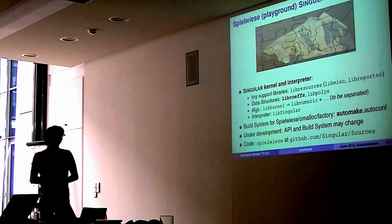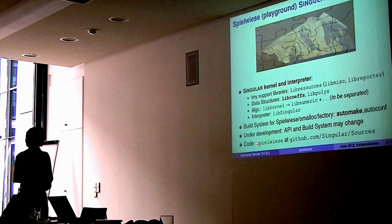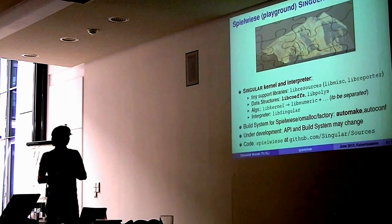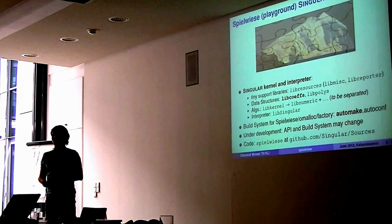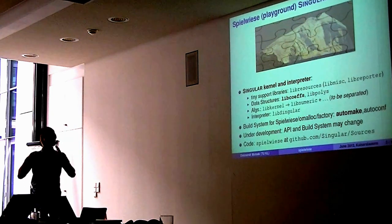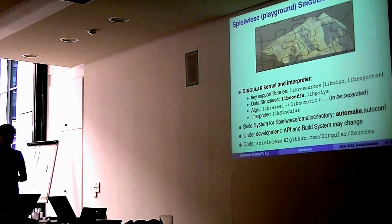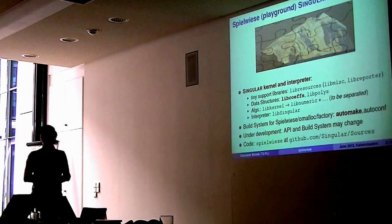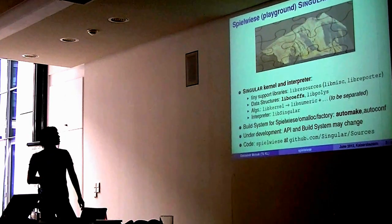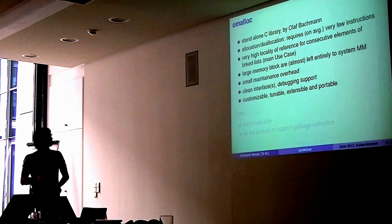Everything is on the Github. Under Singular umbrella, we have a sources repository. Then there are two branches. One master is the usual stable Singular development of the officials in the end. And there is a branch that they place over, experimented.